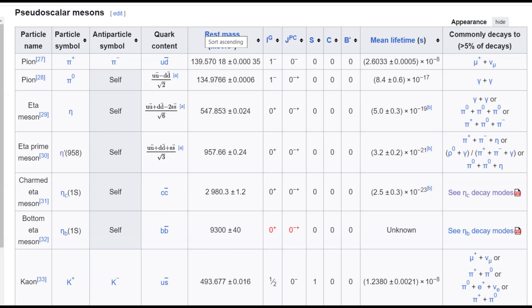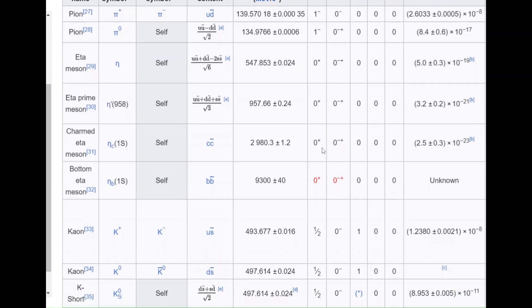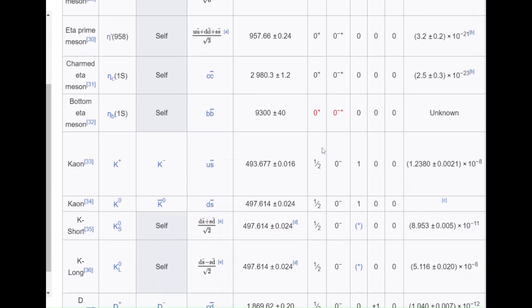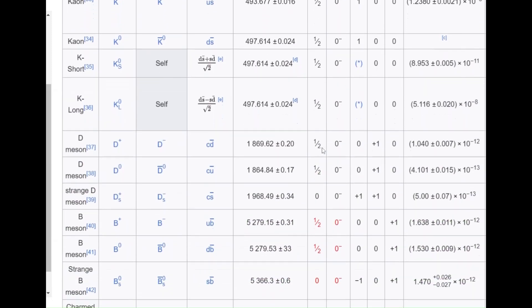And you can have a look through this list and you can see a general trend that if the meson is made up of the same type of anti-particle, it decays very fast with like a mean lifetime less than 10 to the power minus 17 seconds.